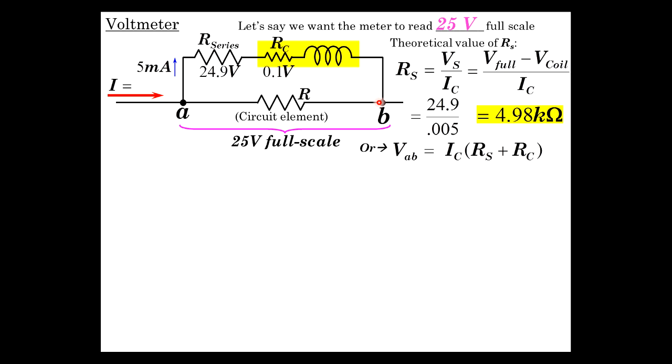Or we could just say VAB is equal to IC, the voltage from A to B is this current times the resistance of the series resistor plus the coil resistance. And so solving for the series resistance: 25 over 5 milliamps minus 20 is 4.98 k.